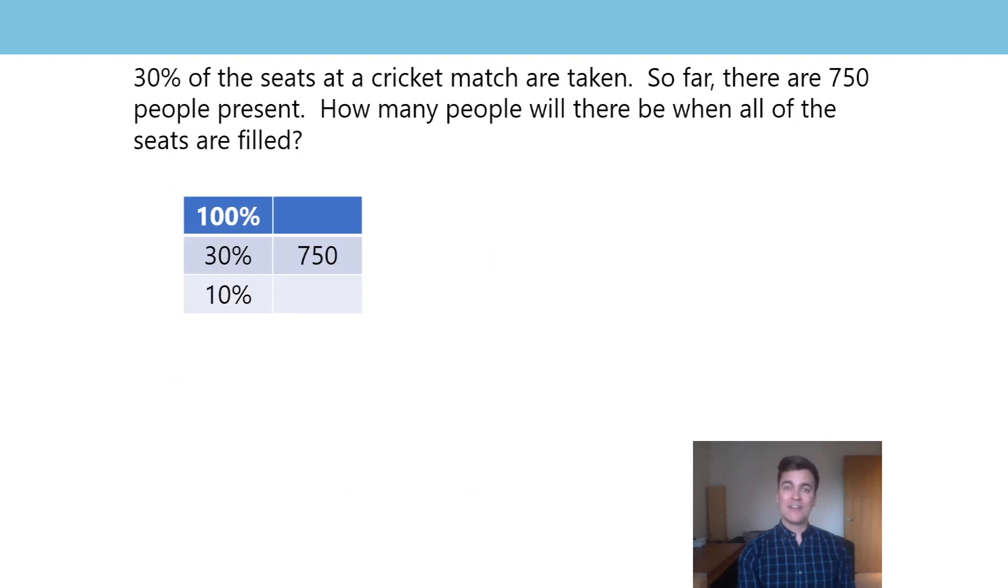Let's transfer that again into a ratio table. This should be quick. So quick pause and fill in those missing spaces, then come back. Press pause. Ready? So the missing values, 2500 and 250. We've divided by 3 and multiplied by 10.